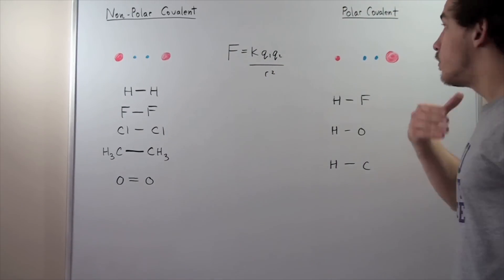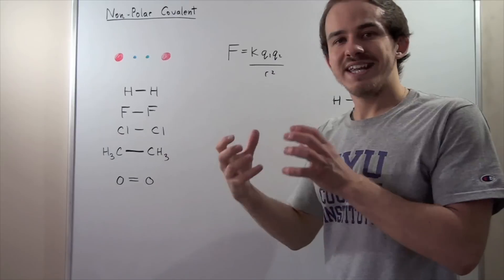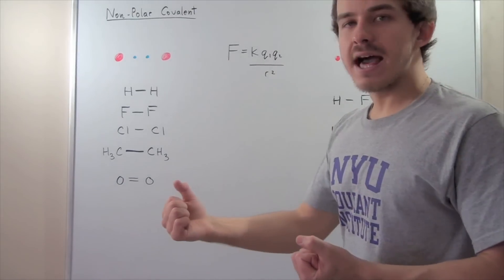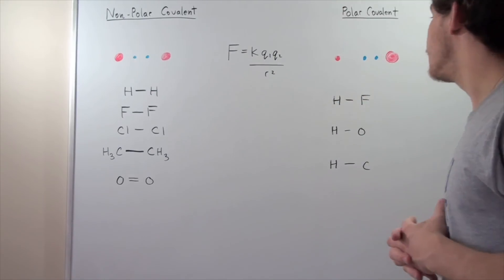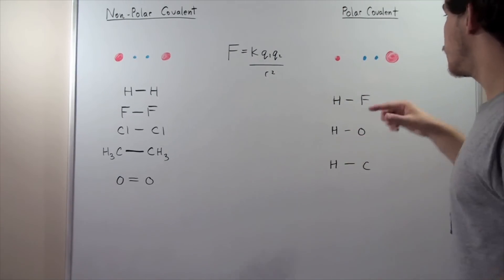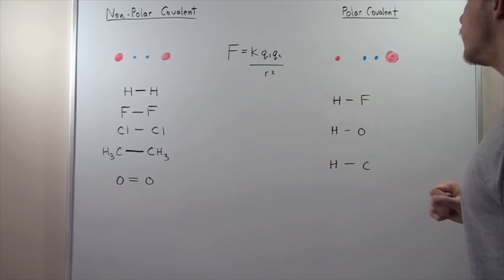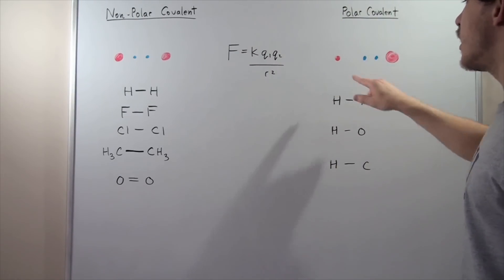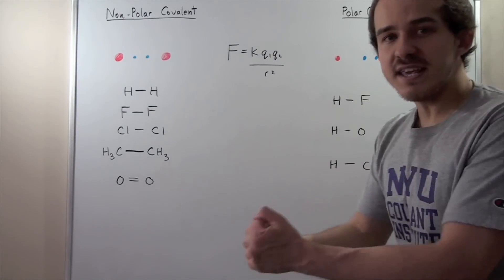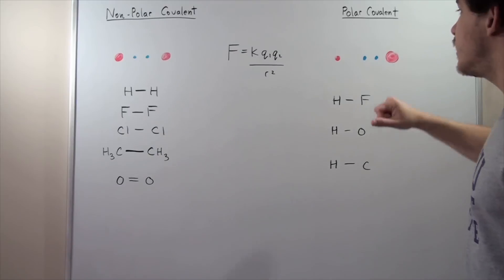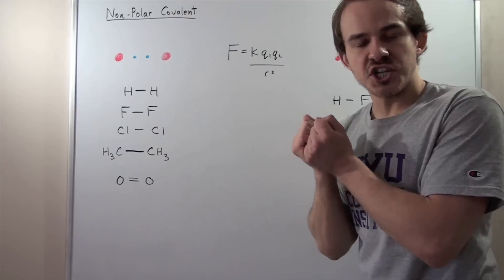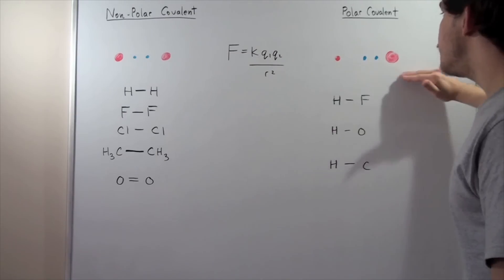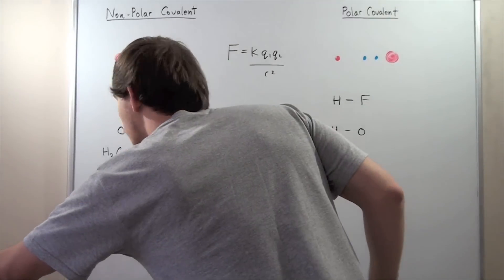Now let's look at polar covalent bonds. Polar covalent bonds simply means there will be an unequal distribution of charge. Suppose we have two atoms with different numbers of protons in their nuclei — a larger atom with more protons than the other. Because of Coulomb's Law, the charge is greater for the larger nucleus, so the force that the shared electrons feel due to that nucleus will be larger. There will be an unequal sharing — an unequal distribution of electrons — giving us a polar covalent bond.